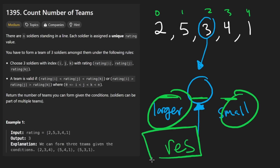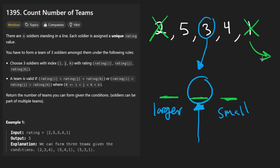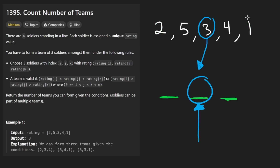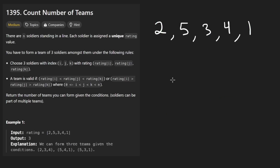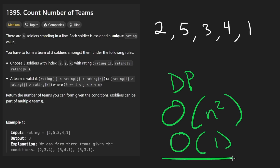And then you're pretty much done. You just do that considering every single element in the input as the middle element. We can skip the first and last elements since the first doesn't have an element to the left, and the last doesn't have an element to the right. The main thing about this solution is it's a lot easier to code up and reason about than the dynamic programming solutions. In terms of time complexity, we're just doing nested loops — it's O(n²). And we don't need any data structures, so space complexity is O(1).